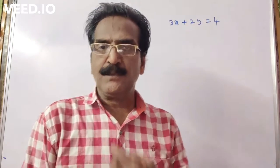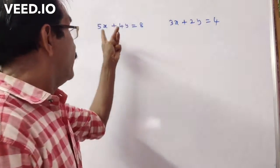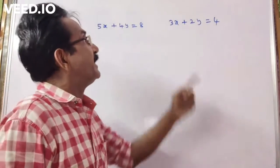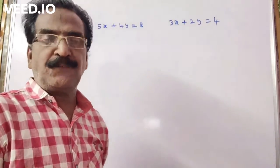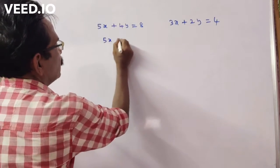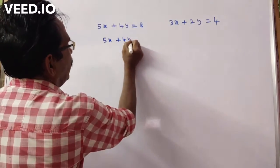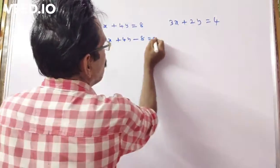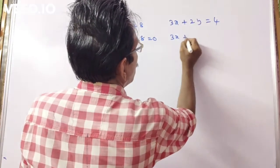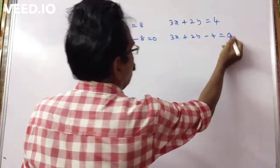Hi friends, good morning. Let us see our next problem. 5x plus 4y is equal to 8, and 3x plus 2y is equal to minus 4. So: 5x plus 4y minus 8 is equal to 0, and 3x plus 2y minus 4 is equal to 0.